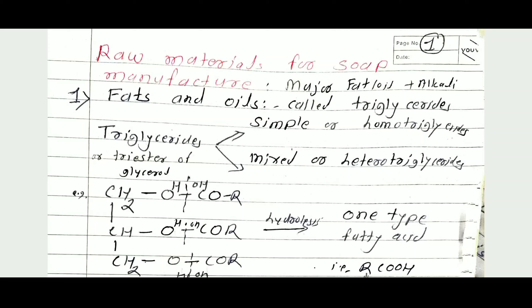Today we discuss raw materials for soap manufacture. There are two major raw materials in soap manufacture: fat and oil is the main raw material, and another raw material is the alkali. Then another three or four materials are added in the manufacturing of soap. First we measure the raw material fats and oils.